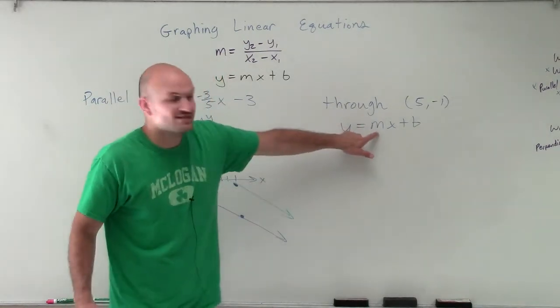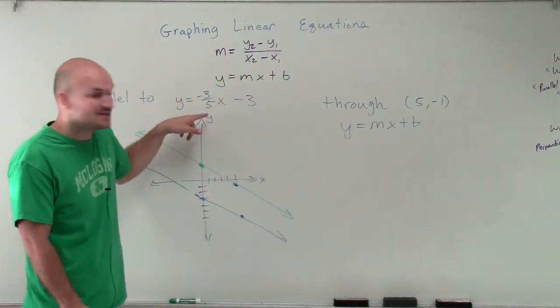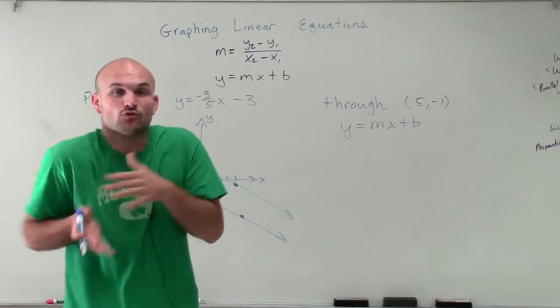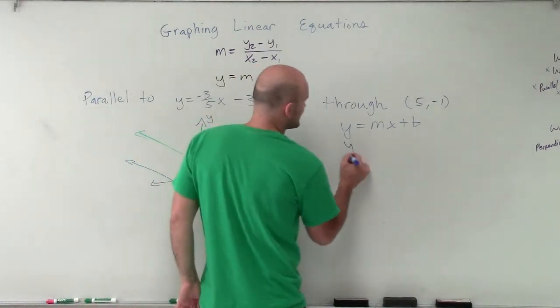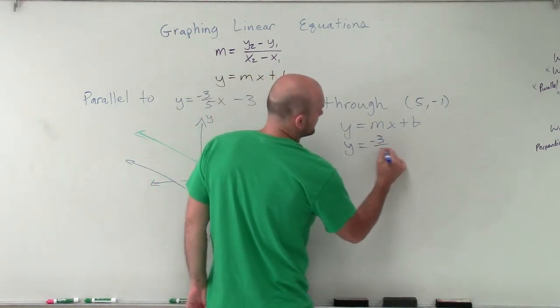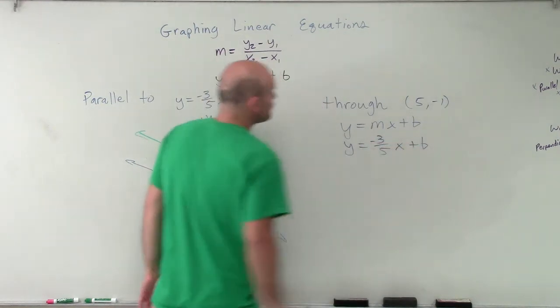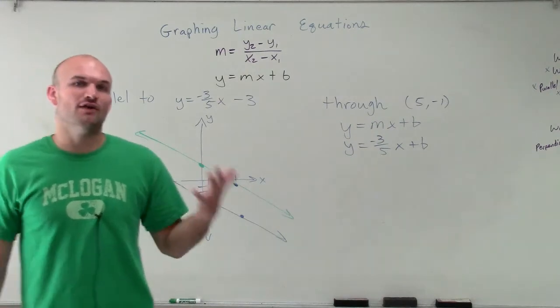Well, I already know that the slope has to be the same as this slope, because if they're parallel lines, the rate of change of the line has to be exactly the same. So that's nice, because I don't really have to do much math to figure that one out. But my problem is, I don't know the value of b.